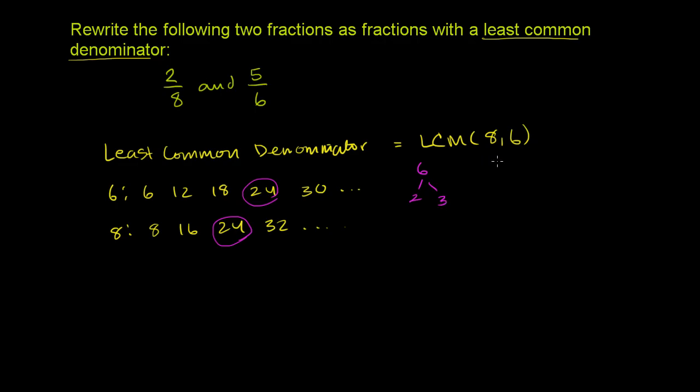And you could have said, what's the prime factorization of 8? It is 2 times 4, and 4 is 2 times 2. So in order to be divisible by 8, you have to have at least 3 2's in the prime factorization.